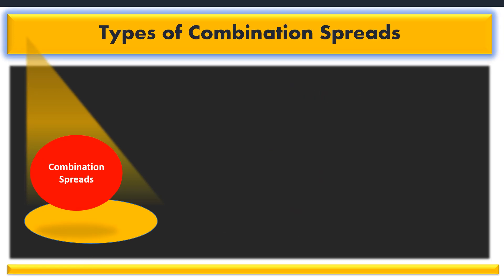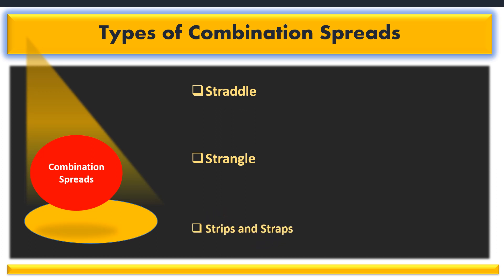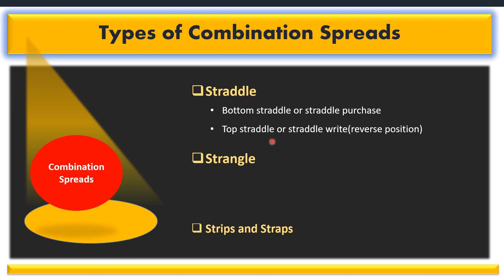Next is the combination spread, where I will be discussing the types of combination spreads. In combination spread, you have to make trading strategies using both call and put together. So in combination spread, we will be studying in detail straddle, strangle, strips, and straps. In straddle, we will see the bottom straddle or straddle purchase, and the top straddle or straddle write, which is also called the reverse position.